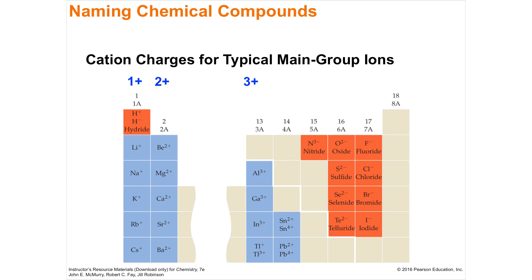Section 2.8: Naming inorganic compounds. Today's lesson is about nomenclature — the naming of compounds based upon the elements contained in them. There are two basic types of compounds named different ways: organic compounds, which are carbon-based, and inorganic compounds. We're doing inorganic chemistry this year, so we'll use an inorganic naming system.